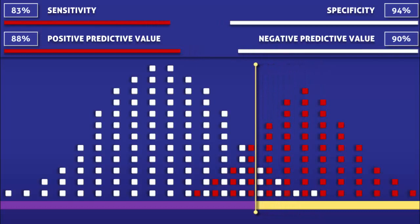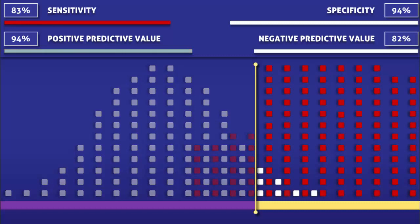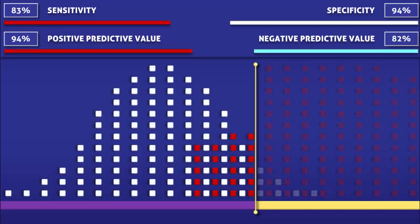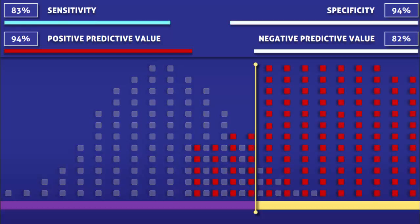With the cutoff level reset to its original location, we will now visualize the effect of prevalence on each of these measures. As the prevalence of the condition increases, the positive predictive value goes up and the negative predictive value goes down, but the sensitivity and the specificity remain unchanged. The positive predictive value has increased because now a greater proportion of people with a positive test actually have the condition. The negative predictive value has decreased because now a lesser proportion of people with a negative test actually do not have the condition. The specificity and sensitivity were not affected because the ratios of true negatives, false positives, false negatives, and true positives have stayed the same.